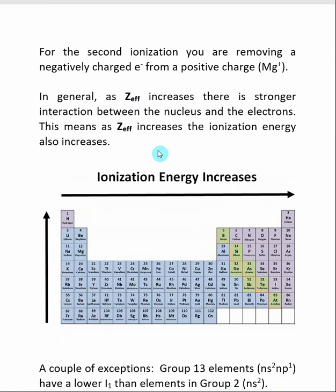Therefore, it would be harder and require more energy to remove. Z-effective increases as we go up and to the right. Therefore, the ionization also increases as we go up and to the right.